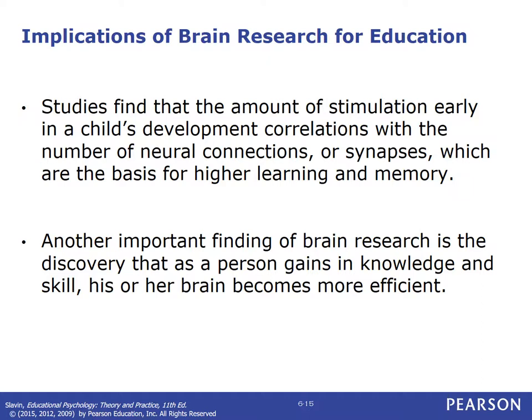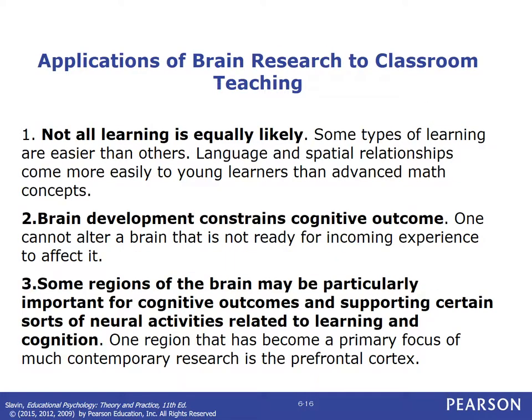Another important finding is that as a person gains knowledge and skill, the brain becomes more efficient. Not all learning is equally likely — some types are easier than others and some are easier at different ages. Language and spatial relationships come more easily to young learners than advanced math concepts. Language is much easier for young learners to pick up than for older learners, because of brain development. The brain is in the best place to learn languages early in childhood. Other countries in Europe start foreign language training as early as preschool.